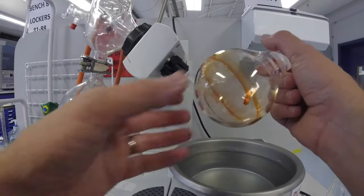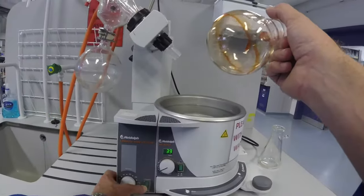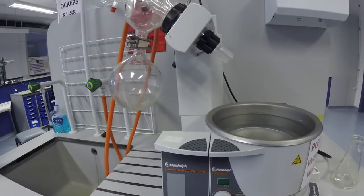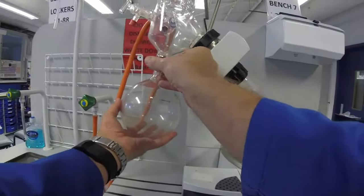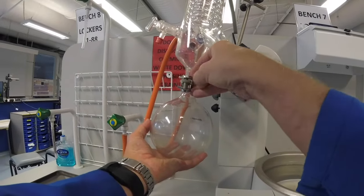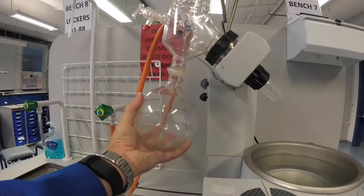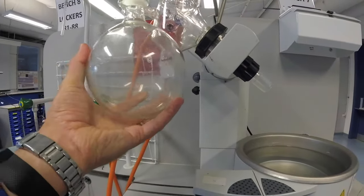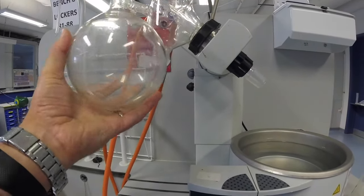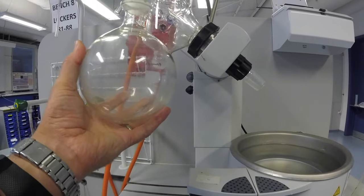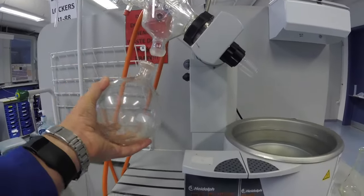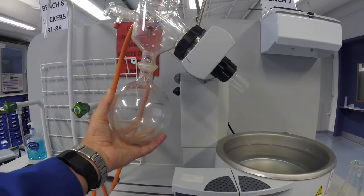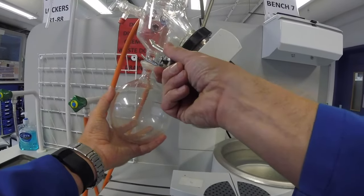The final thing to do then is switch off and then take the receiver flask, unscrew, remove this. And if there's any solvent in here, there isn't in this case because DCM is very low boiling and the house vacuum is very high. It's a very good vacuum. But it's to make sure you do empty anything that you've collected in the receiver flask out of here.